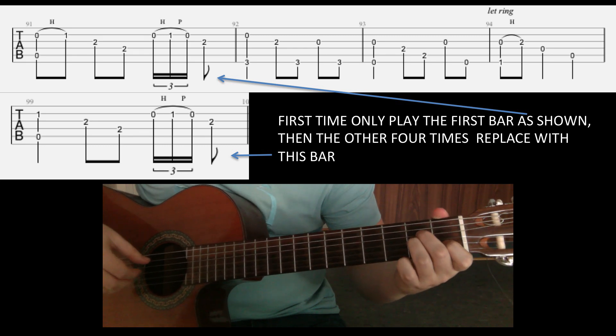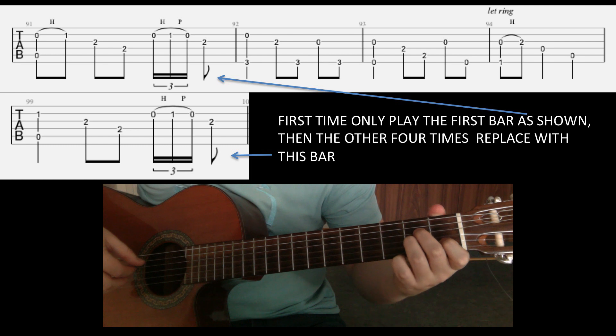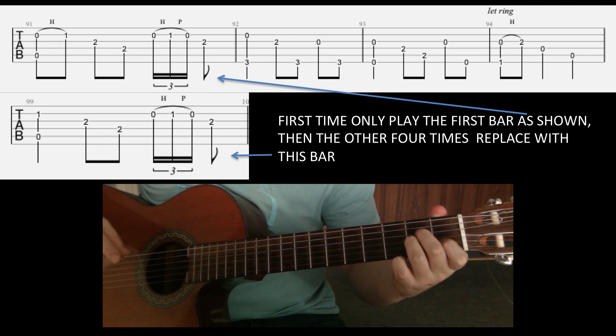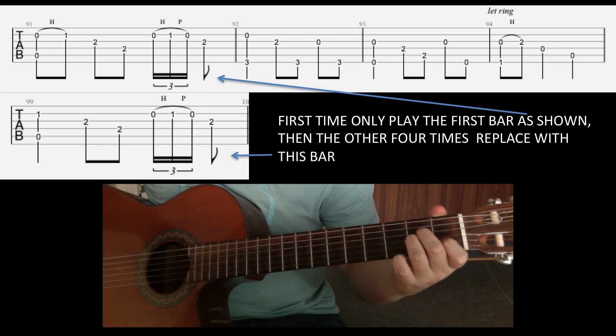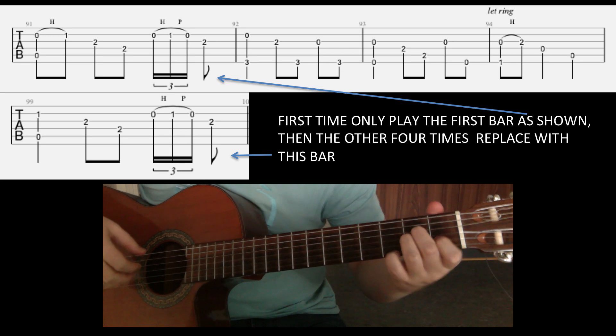Okay, so this is the acoustic part of To Live Is To Die, and that's the acoustic part in the middle of the song.